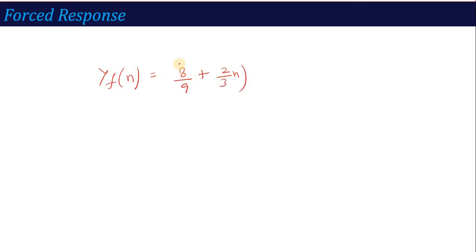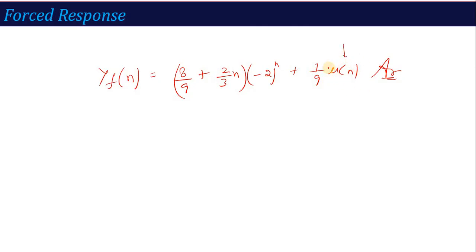The final result gives the complete step response, which includes the term (1/9)·u[n], and this is the output response of the system — the forced response, since the input is given as u[n]. This is the answer we wanted to calculate.